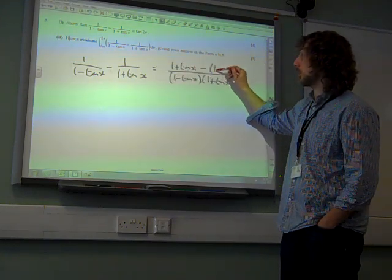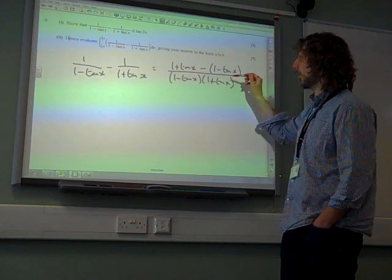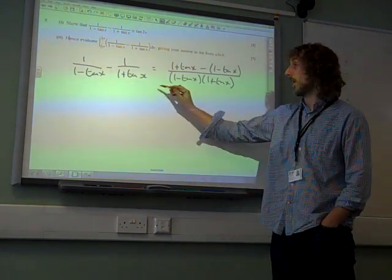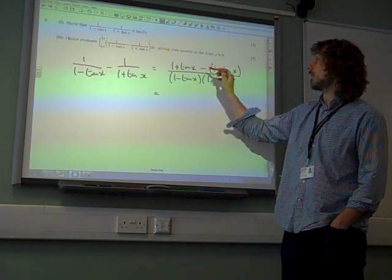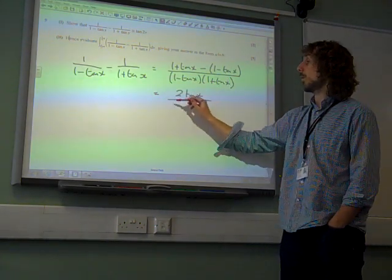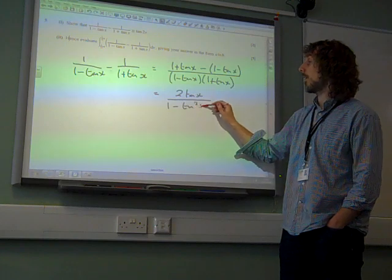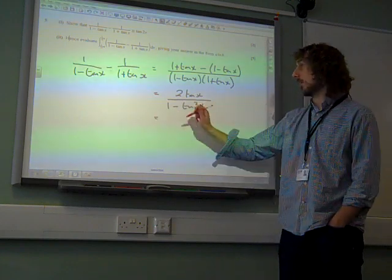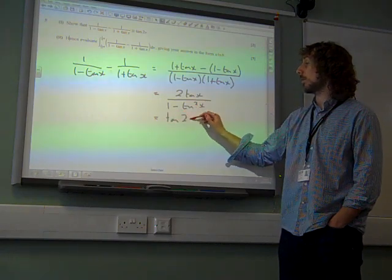The second fraction we've multiplied by 1 minus tan x, top and bottom, to give us that. That's really the step that you need to show to get all the marks. We then simplify this to give us 2 tan x over 1 minus tan squared x. And it's enough to be able to then make the step and say that that is tan 2x.